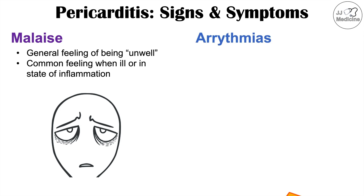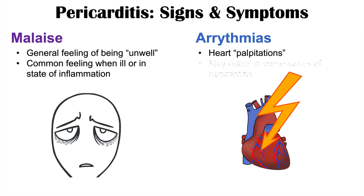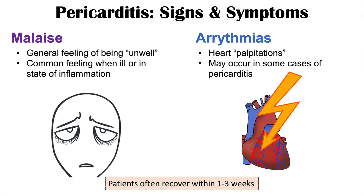Arrhythmias can also occur in some patients with pericarditis. If the pericardium is inflamed, this may cause some issues with the rhythm of the heart, so heart palpitations can occur — though this can occur in some cases but not always. It's important to note that patients with pericarditis oftentimes will recover within one to three weeks, but they can go on to having complications from pericarditis.